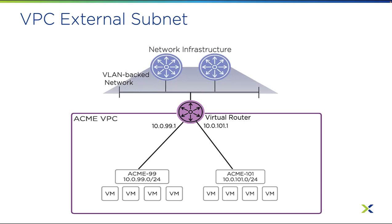An external subnet is a VLAN-backed network, also known as an underlay network, providing connectivity from VMs within the VPC to hosts external to the VPC. External subnets must be an actual VLAN and defined on the VLAN-backed infrastructure. An external subnet can be attached to multiple VPCs and can be deployed with functionality to enable network address translation, or NAT, to and from the attached VPCs. NAT functionality also provides the ability to use overlapping IP network address space in separate VPCs without causing a conflict.